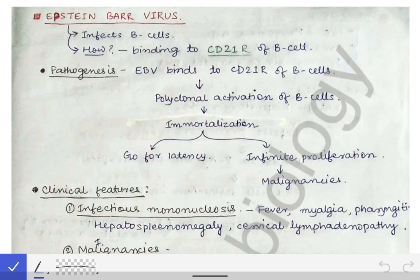Now we are going to read about the Epstein-Barr virus. These are very important viruses in microbiology as well as in pathology, because they are associated with many carcinomas and many neoplasms or malignancies. That's why they become a very important virus for us to know.